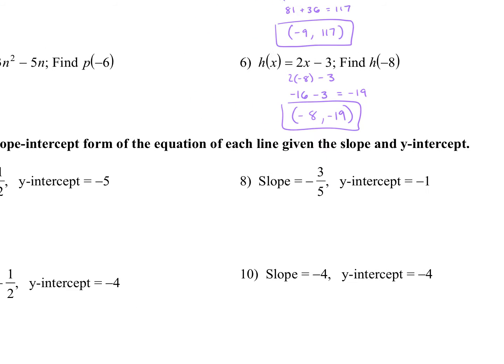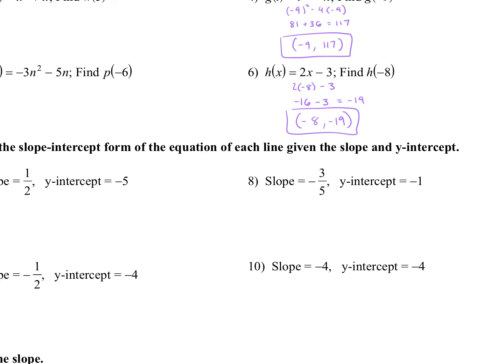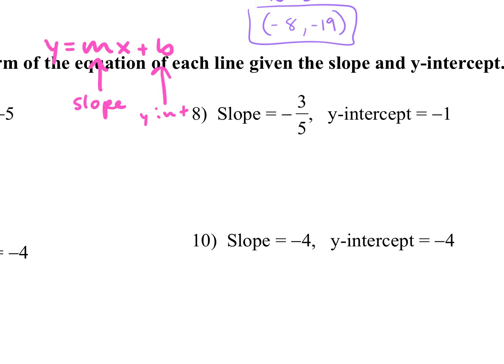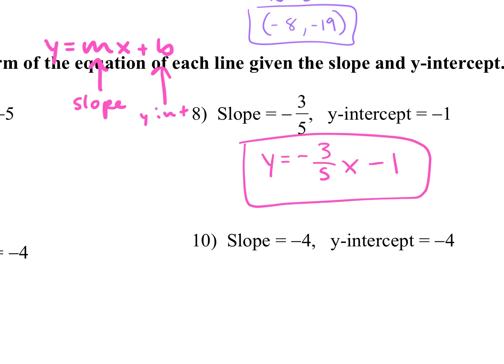Here we have to write the equation of our line in slope-intercept form. What is slope-intercept form? Y equals mx plus b. So m is the slope, and b is the y-intercept. All I'm doing for these is taking my slope and my y-intercept and plugging it in. Notice how I don't put the plus when it's a negative y-intercept — it just becomes minus. The minus overpowers the plus, so you wouldn't write plus negative 1, just minus 1.